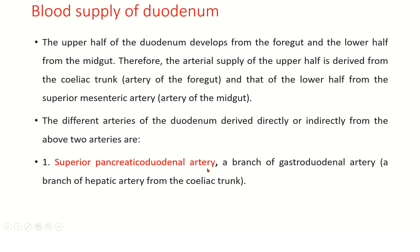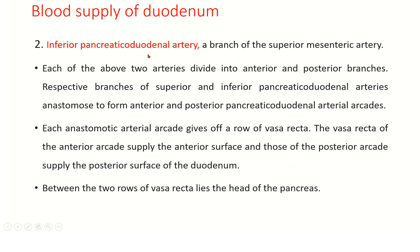The superior pancreaticoduodenal artery is a branch of the gastroduodenal artery, which is a branch from the hepatic artery of the celiac trunk. The inferior pancreaticoduodenal artery is a branch of the superior mesenteric artery. Each of these two arteries divides into anterior and posterior branches; the respective branches anastomose to form the anterior and posterior pancreaticoduodenal arterial arcades. Each arcade gives off a row of vasa recta — those from the anterior arcade supply the anterior surface and those from the posterior arcade supply the posterior surface of the duodenum. Between the two rows of vasa recta lies the head of the pancreas, which is also supplied.